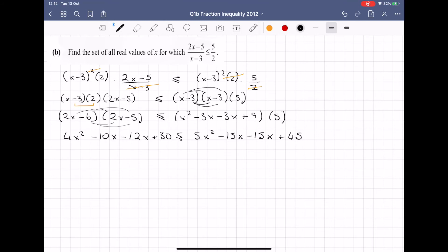So to finish this off then, I'm going to bring everything over to the left-hand side so that anything on the right now is going to change sign. So I will have 4x² - 10x - 12x + 30 - 5x² + 15x + 15x - 45, my inequality sign, and now there's 0 on the right because I brought everything over to the left.